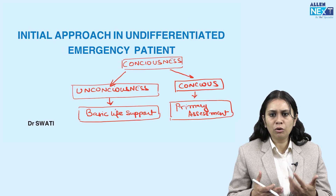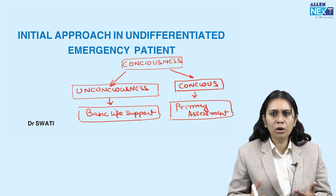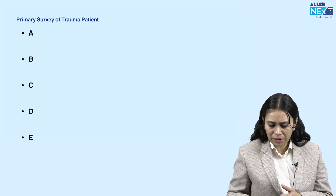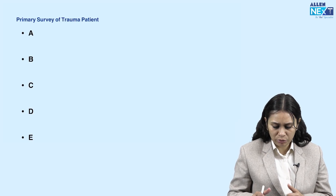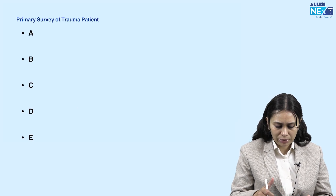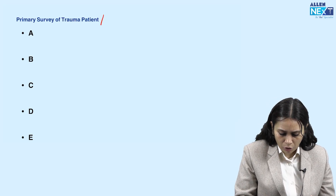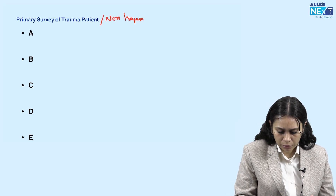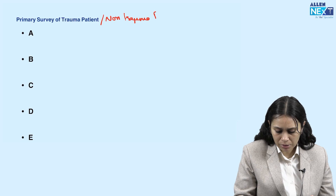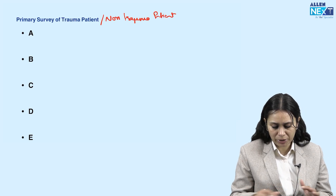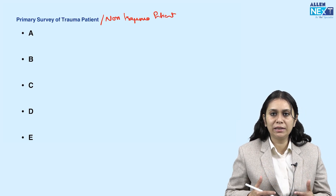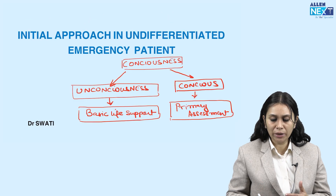The patient is conscious and talking with you. For primary assessment, we do something called A, B, C, D, E — for both trauma and non-trauma patients. After doing the primary assessment A, B, C, D, E, we do something called secondary assessment.